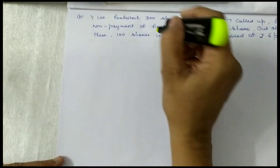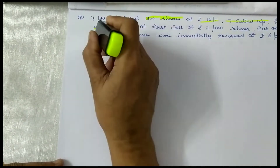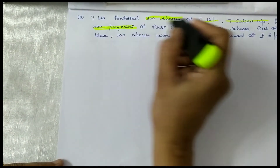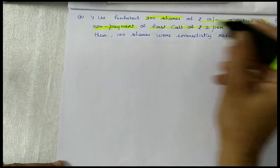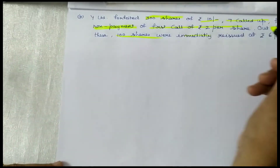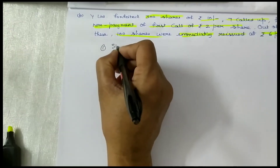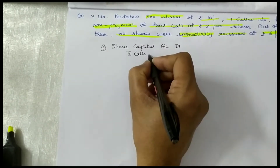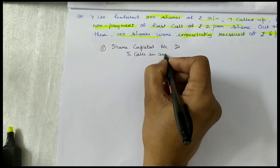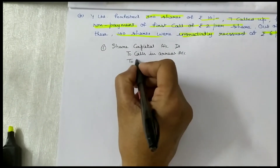While Limited forfeited 300 shares of Rs.10 each, Rs.7 called up, for non-payment. It is written as non-payment of first call of Rs.2 per share. Out of these, 100 shares were immediately reissued at Rs.6 per share. Share capital account debited, calls in arrears debited, to share forfeiture account.